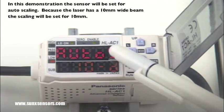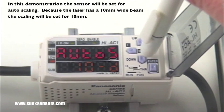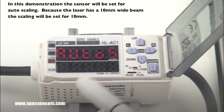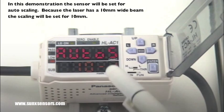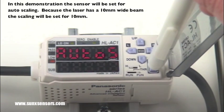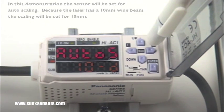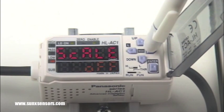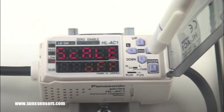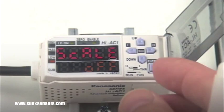In this demonstration, the sensor will be set for auto scaling. Because the laser has a 10 millimeter wide beam, the scaling will be set for 10mm. This means that the display will go from 0 to 10 millimeters, depending on how much of the beam is blocked.